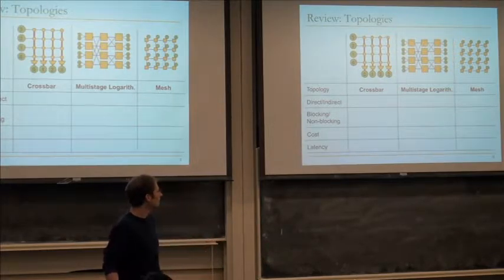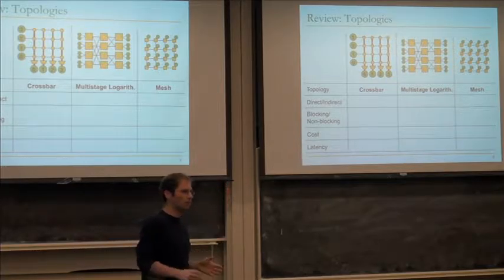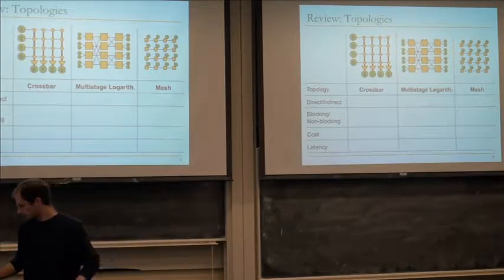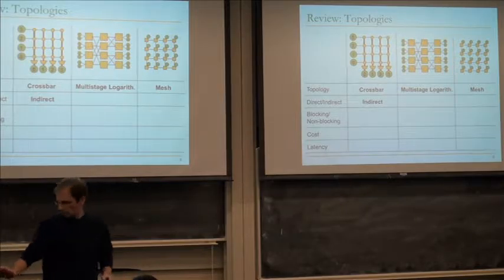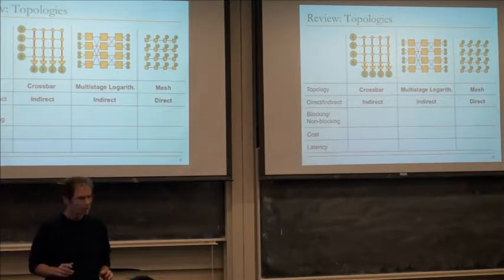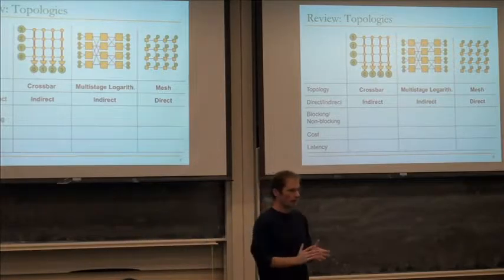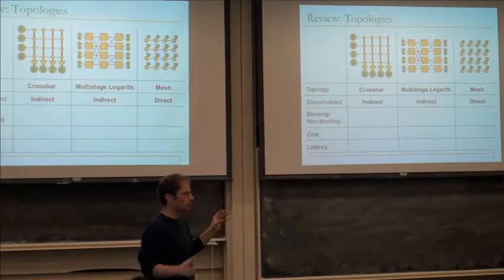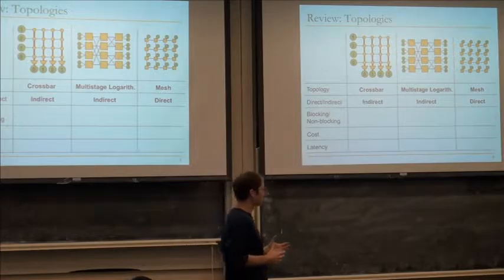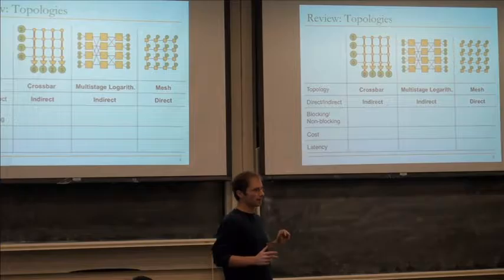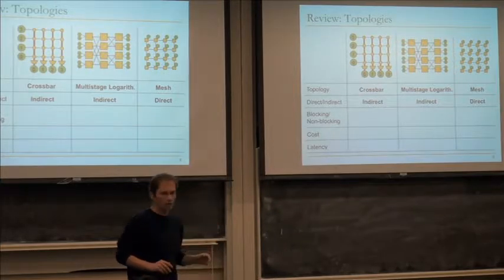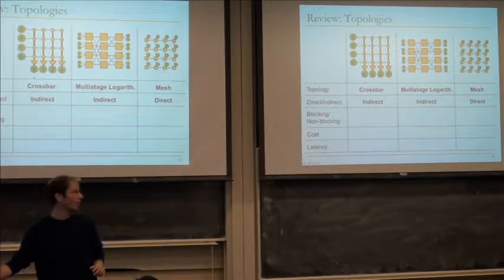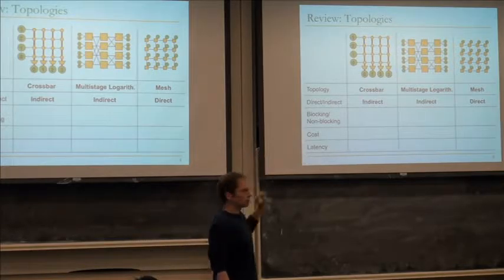Another very common design, especially in more recent work, is the mesh. A mesh is basically a 2D grid of nodes — or n-dimensional in general, so you could have a 3D mesh with 3D stacking. At every point in this mesh there's a processing element — a core, a piece of cache, maybe a memory controller — connected to a router. All these routers connect only to their neighbors: north, east, south, west. The advantage of a mesh is really good scalability because you only connect to direct neighbors, with no global wires like in a crossbar.